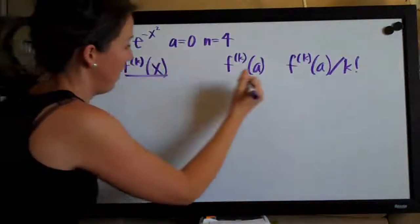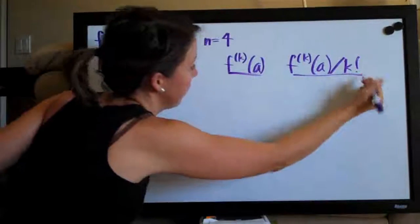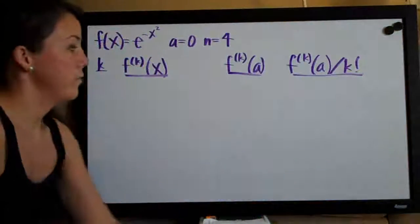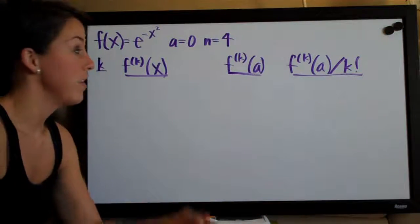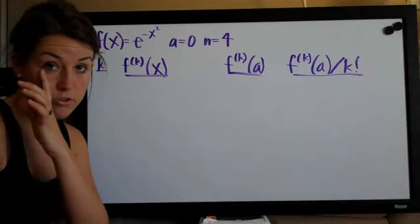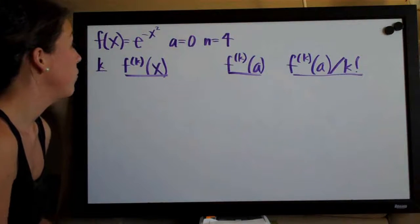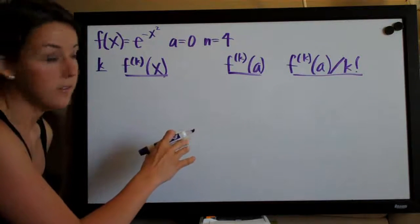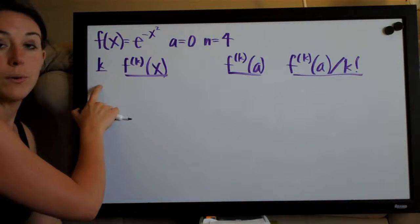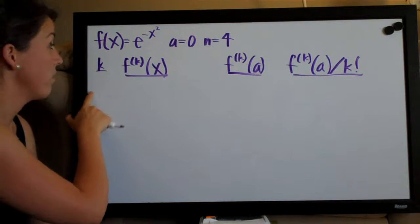These are our four columns and we're going to build ourselves a table and then use the values in the table to construct the polynomial at the end. So we always start with a table like this. We always want to address the first column, k, first.